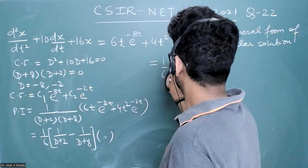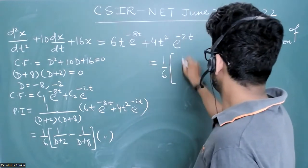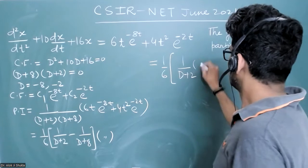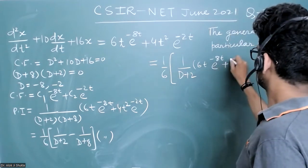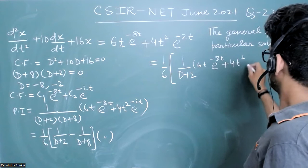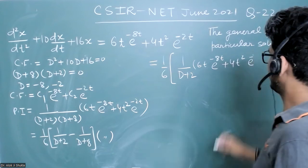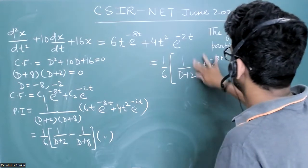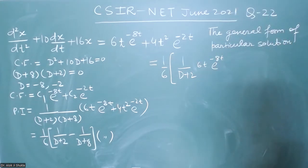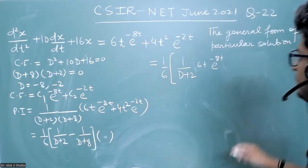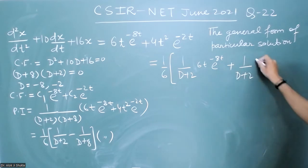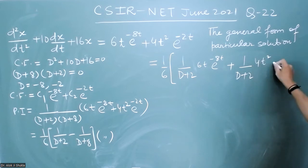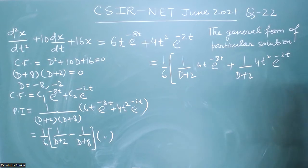This will become (1/6) times: the first term will be 1/(D+2) acting on 6t·e^(−8t), plus 1/(D+2) acting on 4t²·e^(−2t). Let me write these as separate terms. So the first term is 1/(D+2) acting on 6t·e^(−8t), and then 1/(D+2) will also operate on 4t²·e^(−2t).